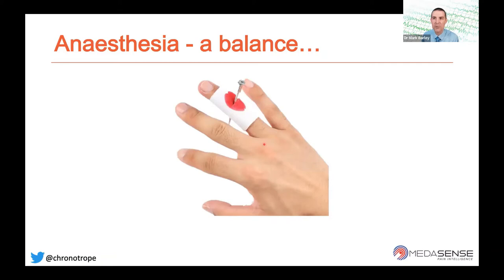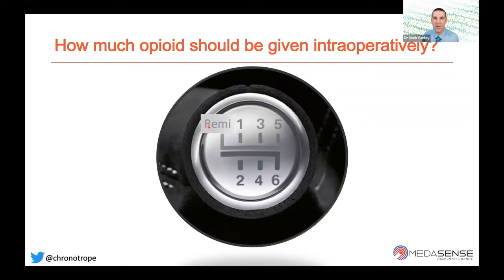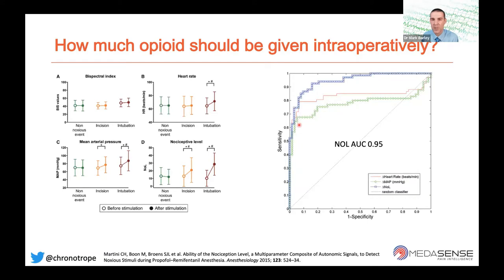How do we judge how much opioid to give intraoperatively? We can use clinical expertise, cardiovascular parameters like the PRST score, or simply dial up a remifentanil effect site concentration of four, five, six or higher. Heart rate, mean arterial pressure, and even the bispectral index show very little change between incision and intubation, making them poor discriminators of noxious stimuli. The NOL performs significantly better, with a statistically significant increase in NOL value when a noxious stimulus is applied.